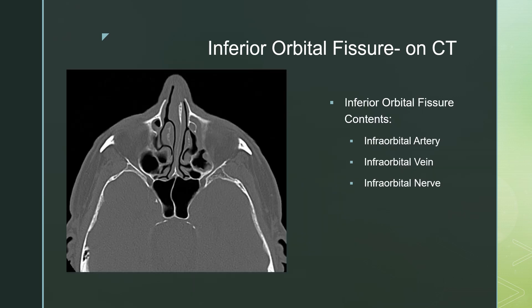The inferior orbital fissure contains the infraorbital artery, nerve, and vein. This is a little bit harder to see on CT imaging. You're basically looking at the inferior aspect of the orbit and looking for the canal transmitting that infraorbital nerve, artery, and vein. You can see this opening right here along the sphenoid, and here are the ethmoids — this is the inferior orbital fissure extending towards the infraorbital canal, which you would see below the orbit itself.